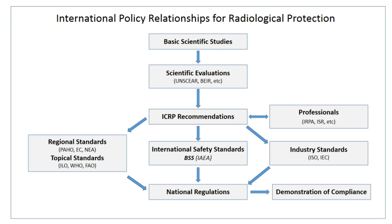Radiation protection, also known as radiological protection, is defined by the International Atomic Energy Agency as "the protection of people from harmful effects of exposure to ionizing radiation, and the means for achieving this." The IAEA also states that "the accepted understanding of the term radiation protection is restricted to protection of people. Suggestions to extend the definition to include the protection of non-human species or the protection of the environment are controversial."